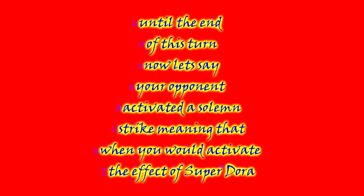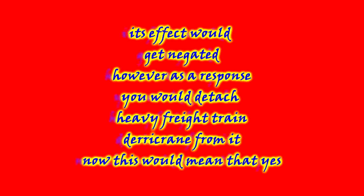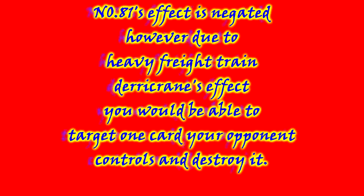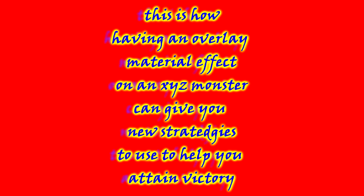Now, let's say your opponent activated a Solemn Strike, meaning that when you would activate the effect of Super Dora, its effect would get negated. However, as a response, you would detach Heavy Freight Train Derrick Crane from it. This would mean that yes, Number 81's effect is negated, however, with Heavy Freight Train Derrick Crane's effect, you would be able to target one card your opponent controls and destroy it. This is how having an Overlay Material Effect on an XYZ monster can give you new strategies to use and help you attain victory.